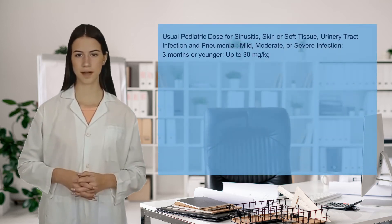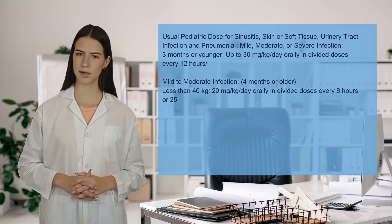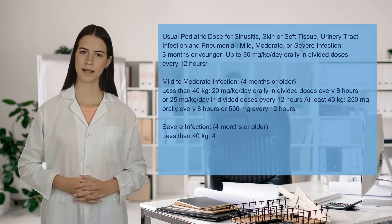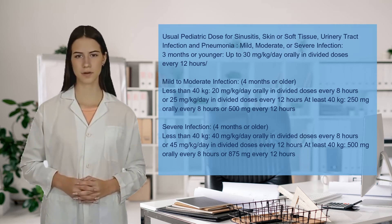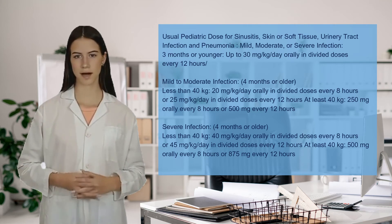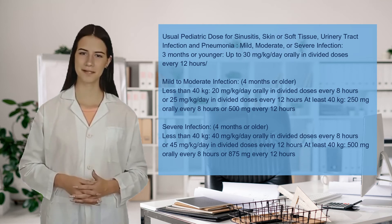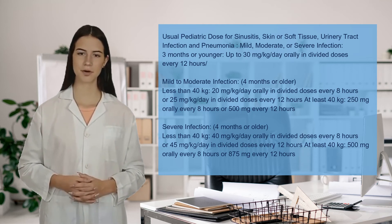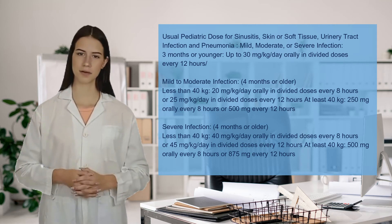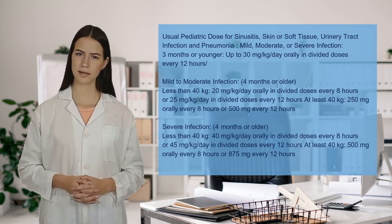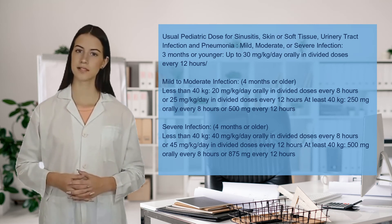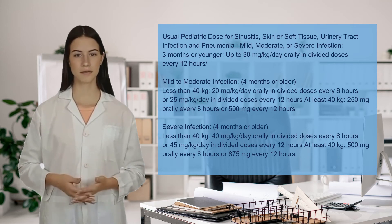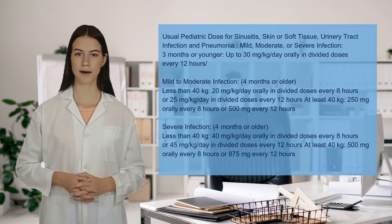Usual pediatric dose for sinusitis, skin or soft tissue, urinary tract infection, and pneumonia. Mild, moderate, or severe infection. 3 months or younger: up to 30 mg per kg per day orally in divided doses every 12 hours. Mild to moderate infection, 4 months or older, less than 40 kg: 20 mg per kg per day orally in divided doses every 8 hours, or 25 mg per kg per day in divided doses every 12 hours. At least 40 kg: 500 mg orally every 12 hours or 875 mg every 12 hours.